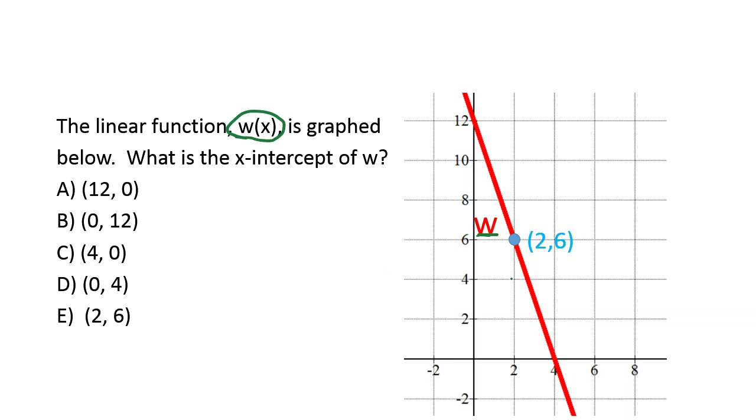They're talking about that red line right there. So w of x is graphed below. What is the x-intercept of w? Remember, x-intercept means where the line crosses the x-axis. And our x-axis is always our horizontal axis. And our y-axis is our vertical axis.